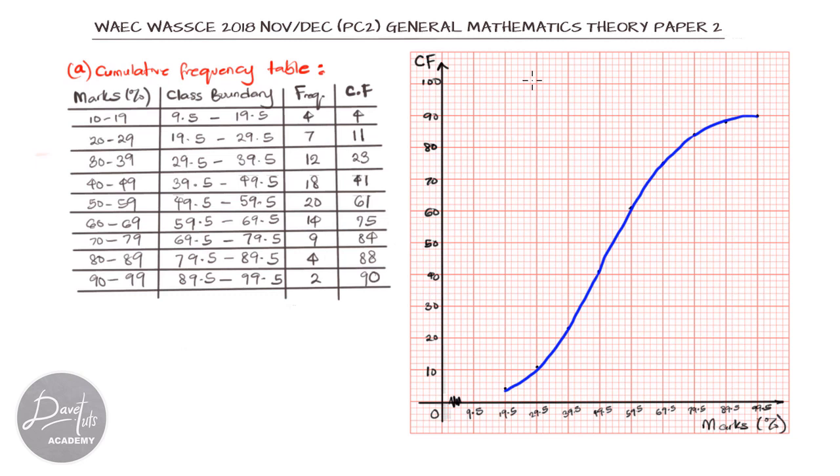With this, we've been able to plot our cumulative frequency curve, also known as OGIF. My scale is that 2 cm is representing 10 units on the horizontal axis and on the vertical axis. Only to know that on the horizontal axis, the one for the marks, we are not starting on a scale of 0, because the first entry there is 9.5, not 10. And with that, we've been able to come up with our graph, and we can move on with the other questions. This is the scale.